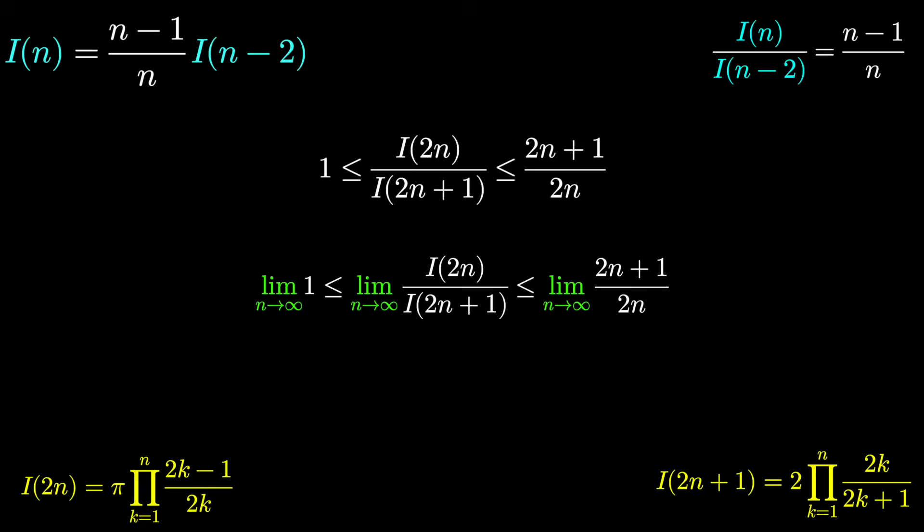If we take the limit across the board, the limit of a constant is the constant itself. On the left, it's just 1. On the right, (2n+1)/(2n). That limit also tends to 1 by L'Hôpital's rule. And so the limit of the ratio of these two functions, I(2n) over I(2n+1), is also 1.